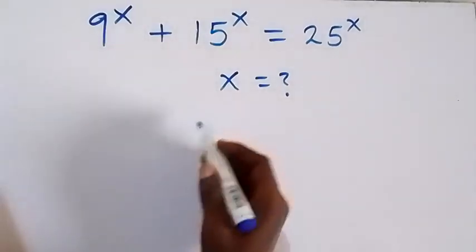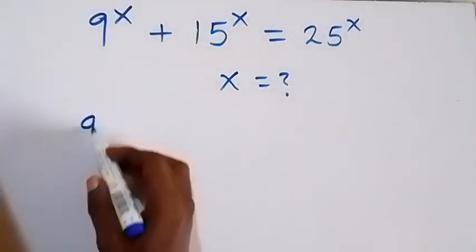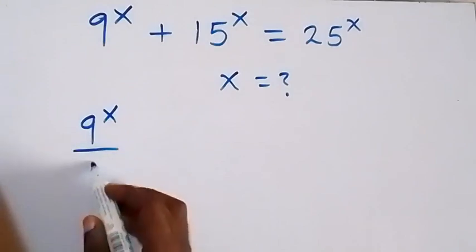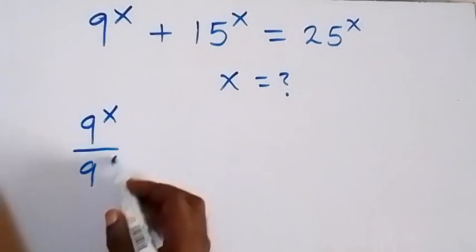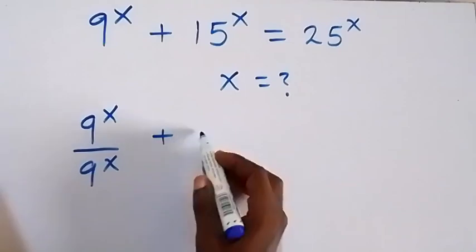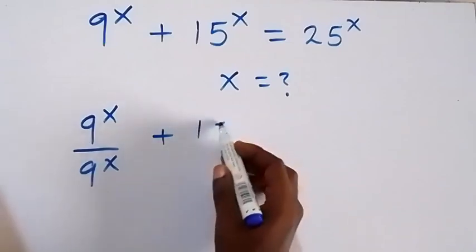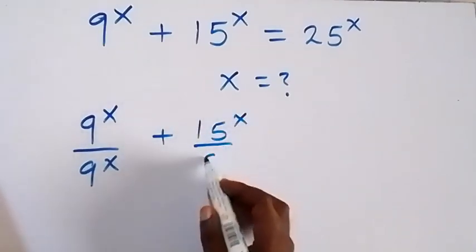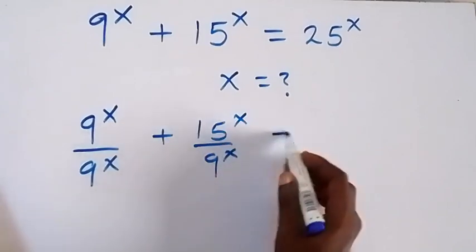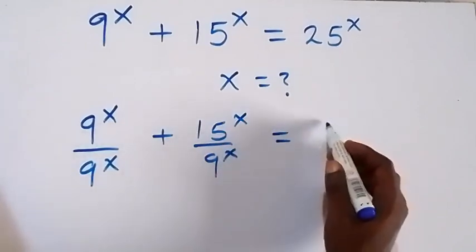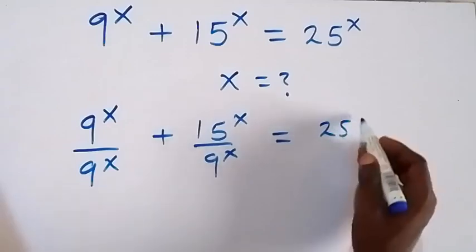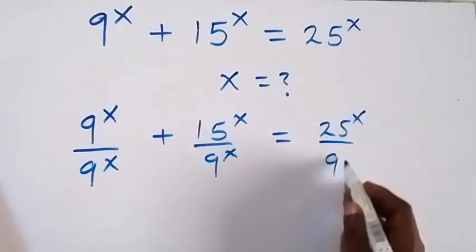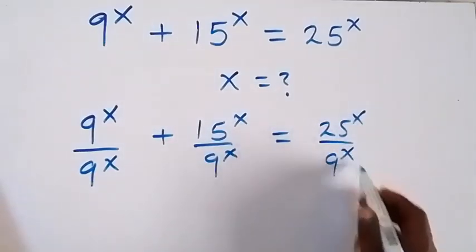Let's divide through by 9 raised to power x. So we have 9 raised to power x divided by 9 raised to power x, then plus 15 raised to power x divided by 9 raised to power x, then equals 25 raised to power x divided by 9 raised to power x.